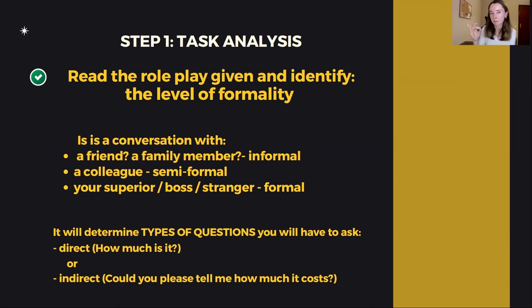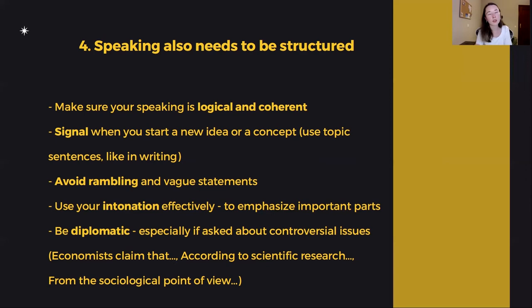Avoid rambling and vague statements. Rambling is when you just start talking and drift apart and you're not focused on the question or topic asked. Vague statements are things that are kind of obvious — clichés that everybody knows. You're not reinventing the wheel. Try to make sure that your statements are supported with argumentation — not just 'it is important to eat healthy.' That's a vague statement. For whom? Why is it important? Always try to be more specific with what you're saying.